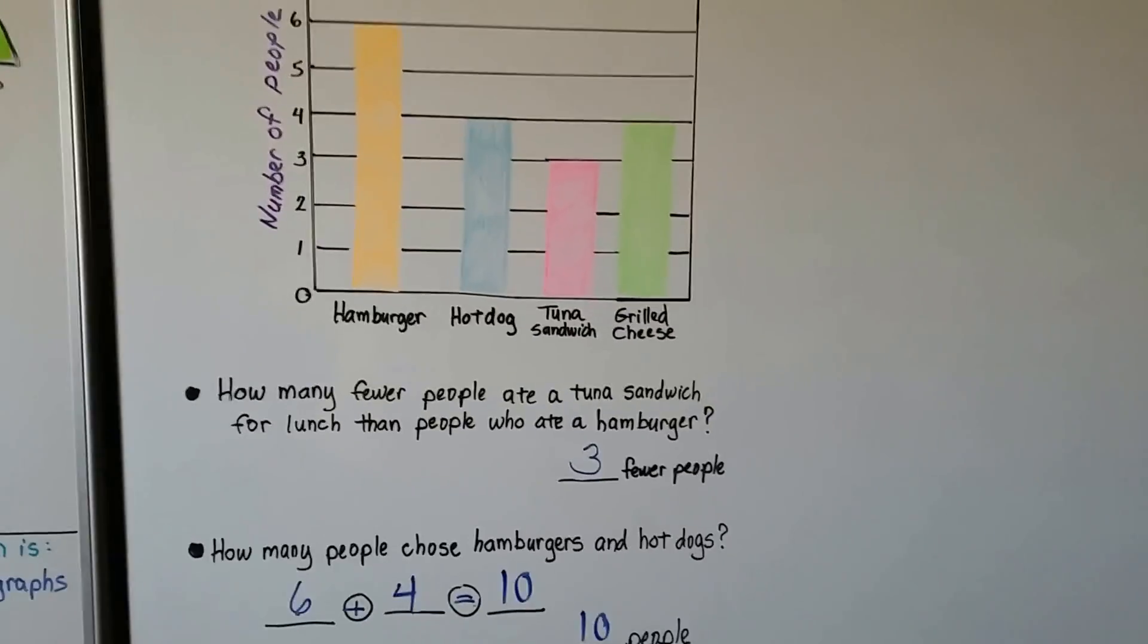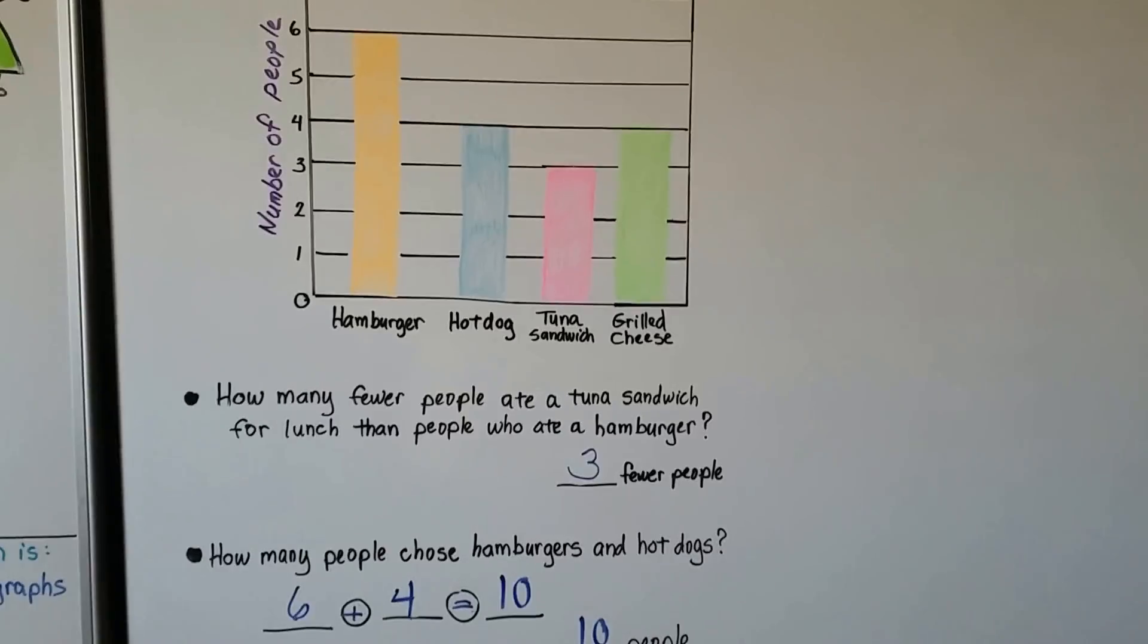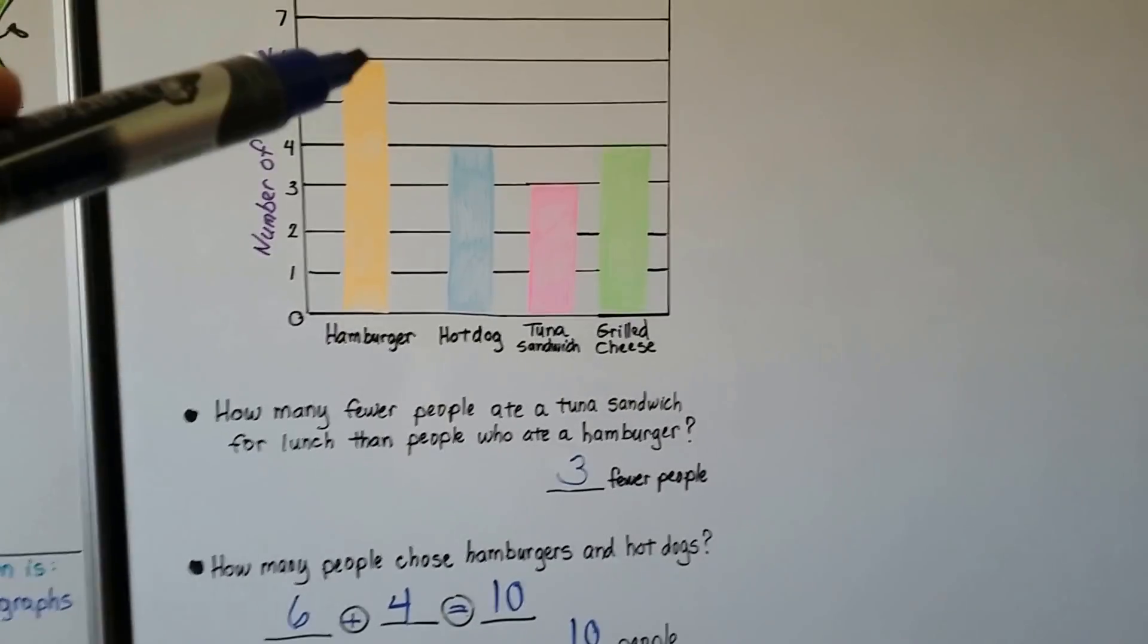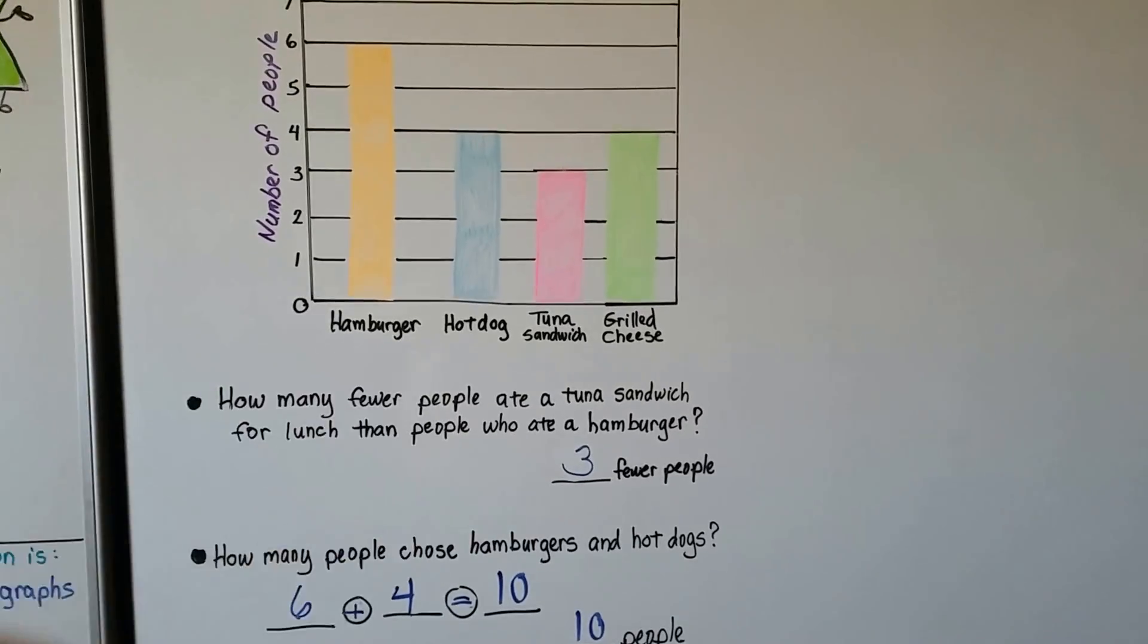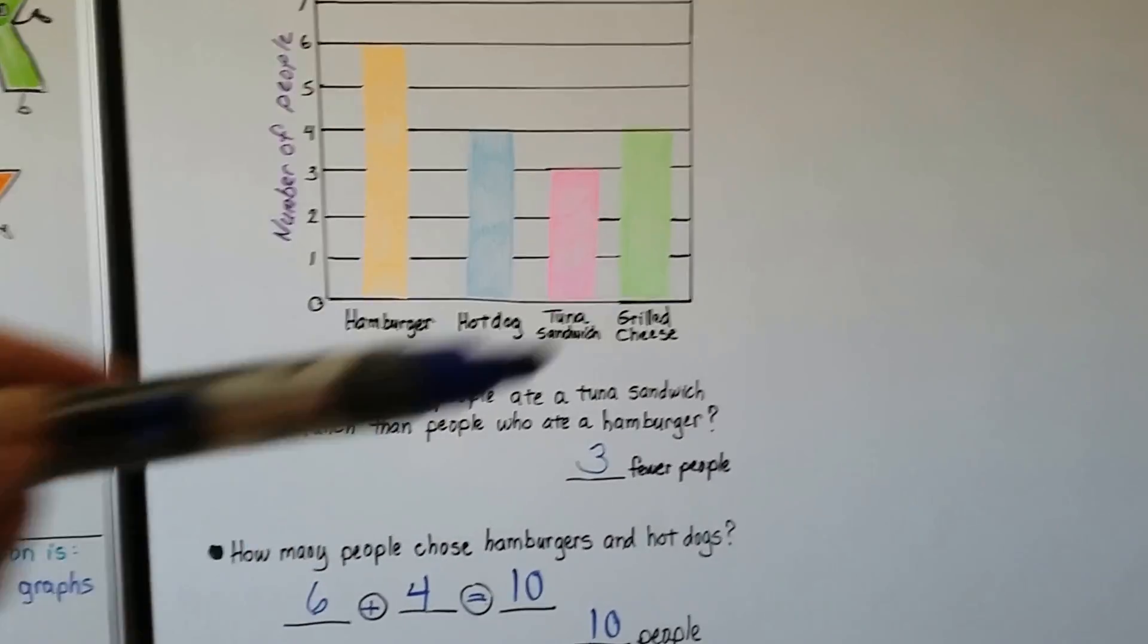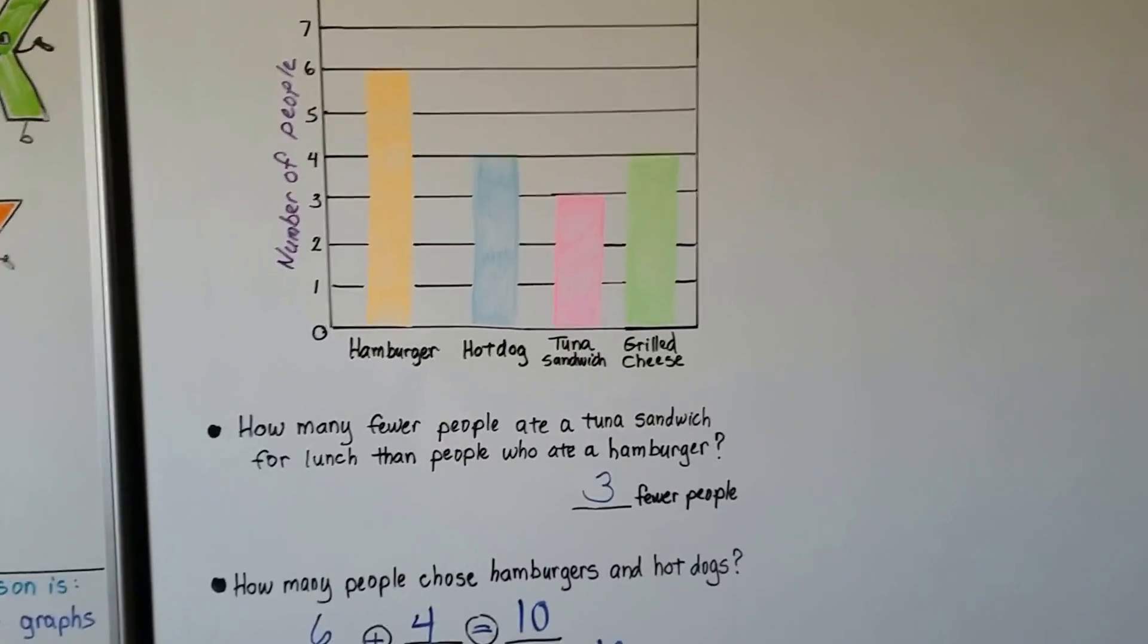We can very easily look at this bar graph and see which was chosen the most. Hamburger, it's the tallest. We can see which was chosen the fewest. It's tuna. It's down here. We can look at how tall the bars are.